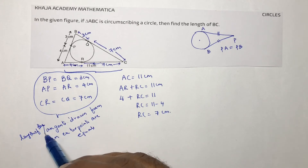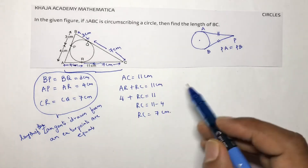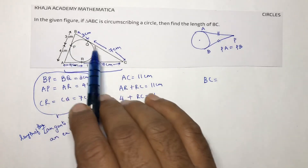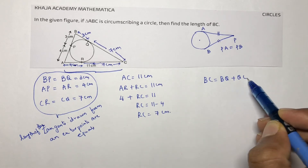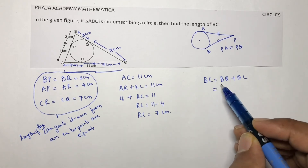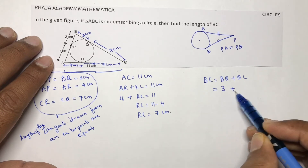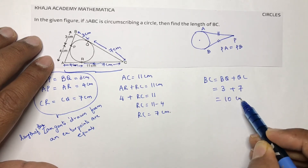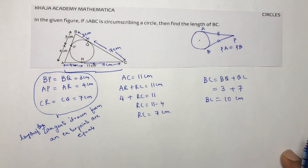We need to find BC. BC equals BQ plus QC, so BQ is 3 centimeters and QC is 7 centimeters, giving BC equals 10 centimeters. The length of BC is 10 centimeters.